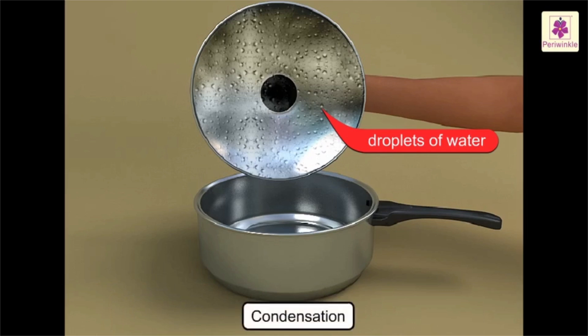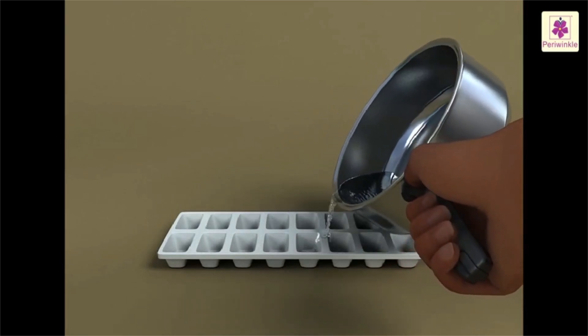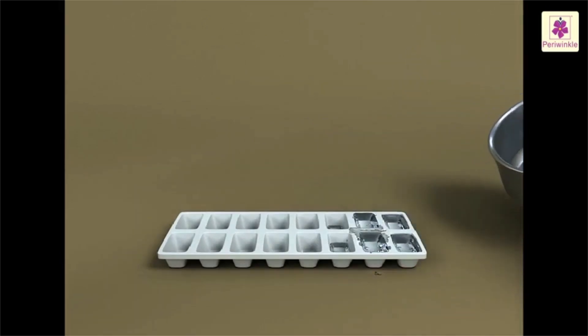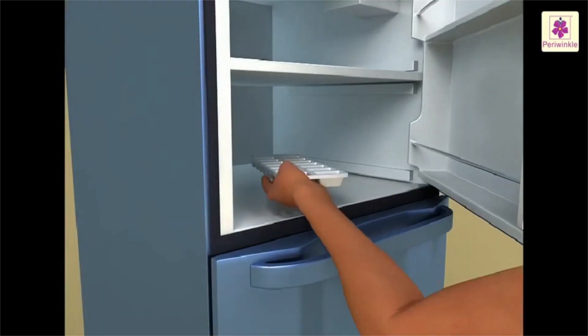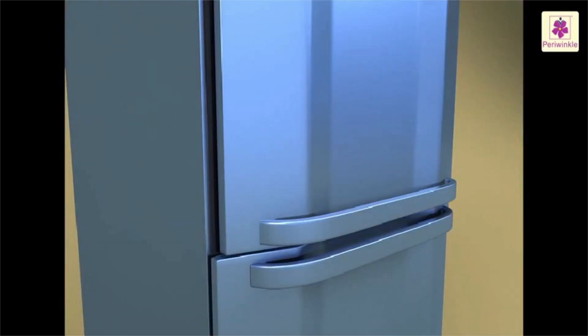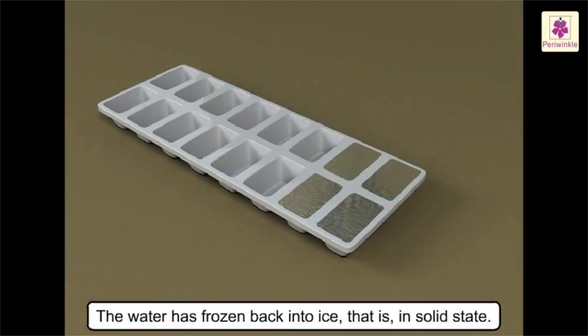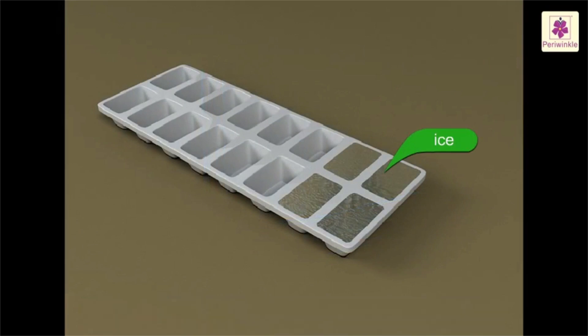Cool the water in the saucepan for some time, then pour it in an ice tray. Keep it inside the freezer of a refrigerator. Remove the ice tray from the freezer after three hours. You will find that the water has frozen back into ice, that is in solid state. This process is called freezing.